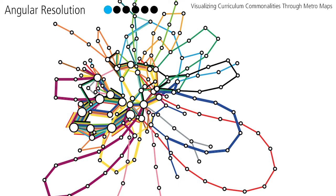Angular resolution. Any edges or lines attached to a station should be as spread out around the circumference of the station as possible instead of being bunched up on one side.